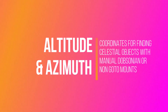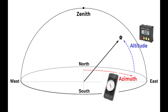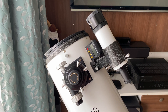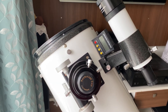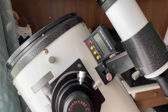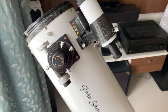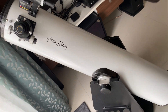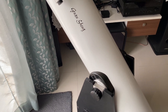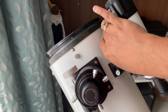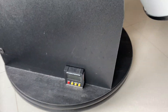Hi friends, I'm making this short video about how to use a simple digital gauge and a mobile compass to find deep sky objects using altitude and azimuth coordinates. As you can see, I have a digital angle gauge which is magnetic, so I can easily stick it onto the Dobsonian body, and at the same time I have my secondary mobile and I will be using the compass app.